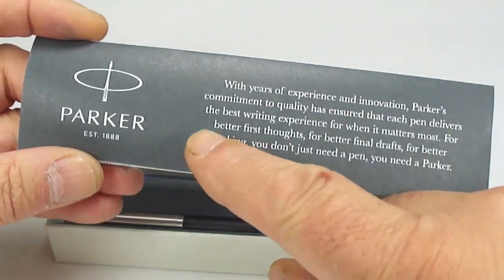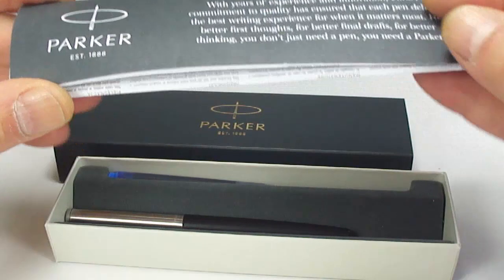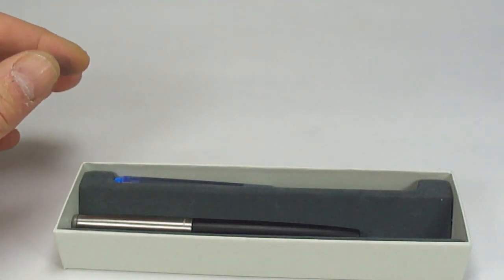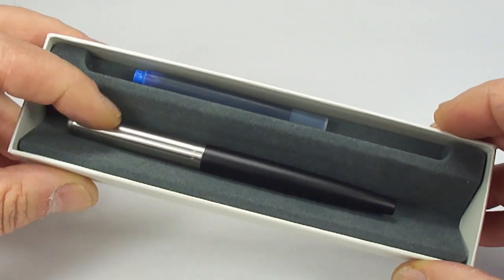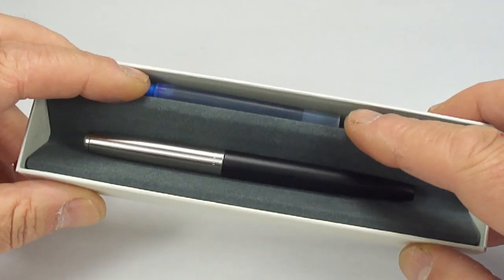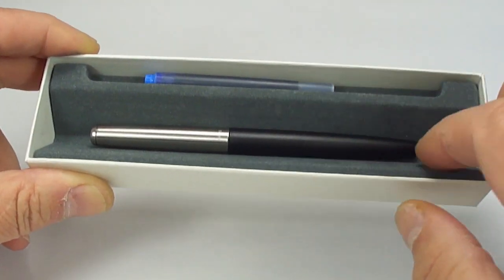First of all you'll find you've got the Parker instruction manual showing you how to use the pen and how to look after it. Then the pen itself comes in the case as you can see there. You also get a spare ink cartridge ready for you to write with this pen.